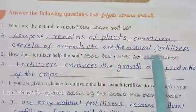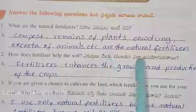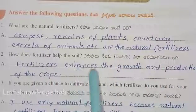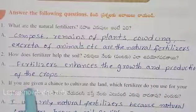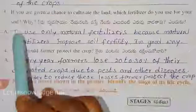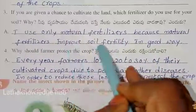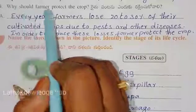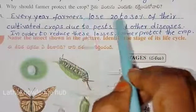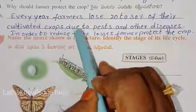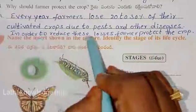How does fertilizer help the soil? Fertilizers enhance the growth and the production of the crop. If you are given a chance to cultivate a plant, which fertilizers will you use? I use only natural fertilizers because natural fertilizers improve soil fertility in a good way. Why should farmers protect the crop? Every year farmers lose 20-30% of their crops to pests and other diseases, so in order to reduce these losses they protect the crop.